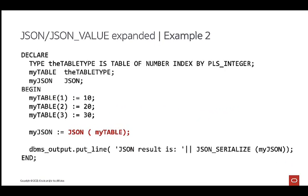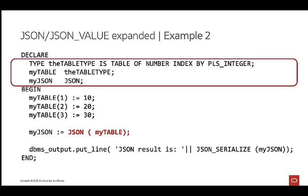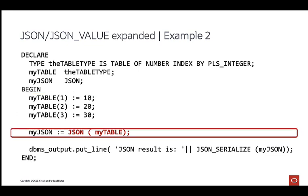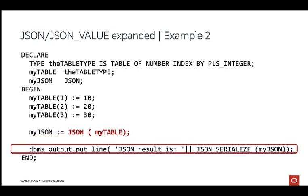Here is a second example, the other way around. In this example, we start with a PL/SQL aggregate — basically the same setup as in the previous example. Only this time, we do not put a value in the JSON variable; we put individual values in the elements of our myTable variable. Then in the next step, these elements are transformed with a single command into JSON using the JSON statement. And the DBMS output shows the result: a regular JSON-style string that can be used by other JSON-consuming processes.